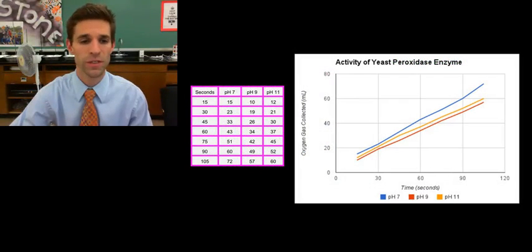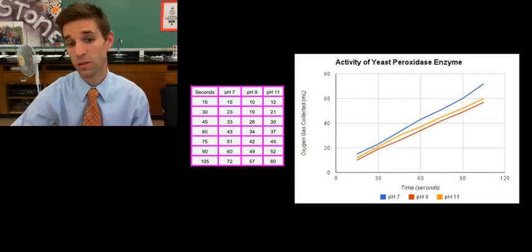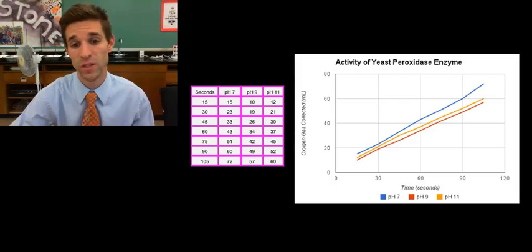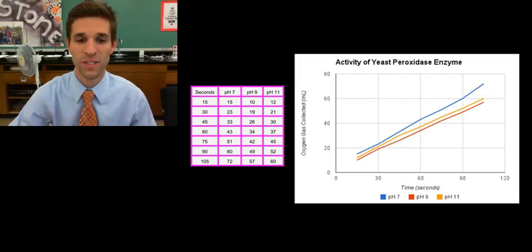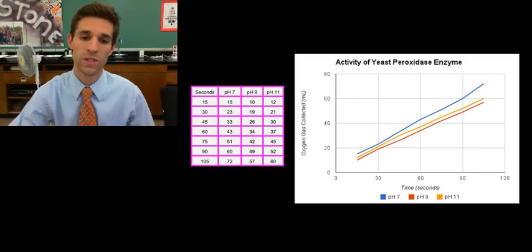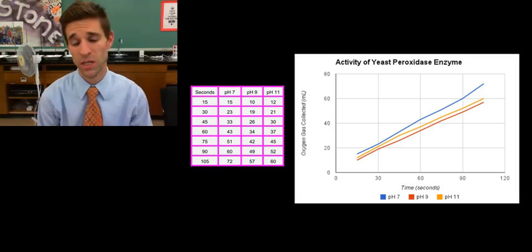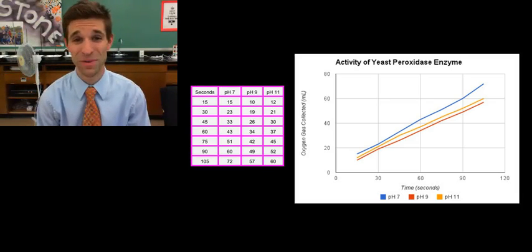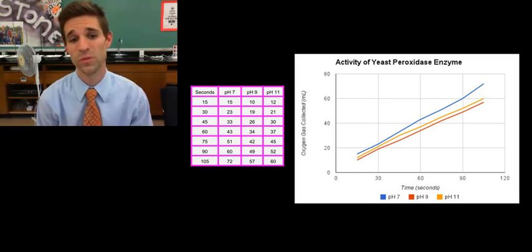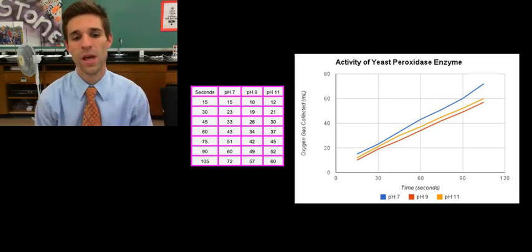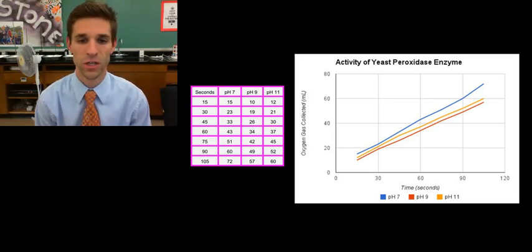And then here's my data. You can see my data table there on the left, and then my chart on the right-hand side. And you can see I tested pH 7, which is neutral pH, and then pH 9 and pH 11. And one of the first things that you can see here that's quite striking is that although the slope and therefore the rate of gas production in the pH 7 is slightly higher than pH 9 and pH 11, it's not that much different. In fact, all three of these reaction rates are, to the untrained eye, the same, almost equal rates in all three of these reaction trials.